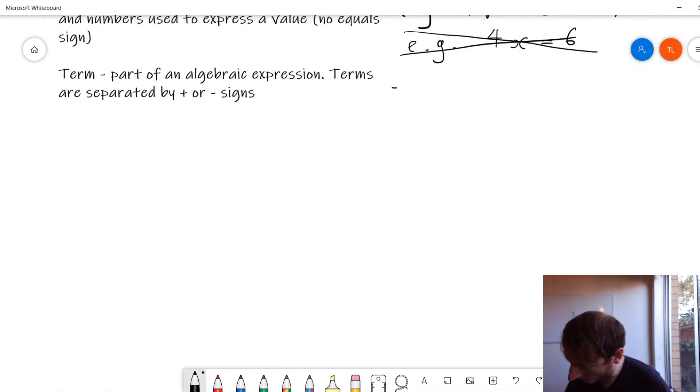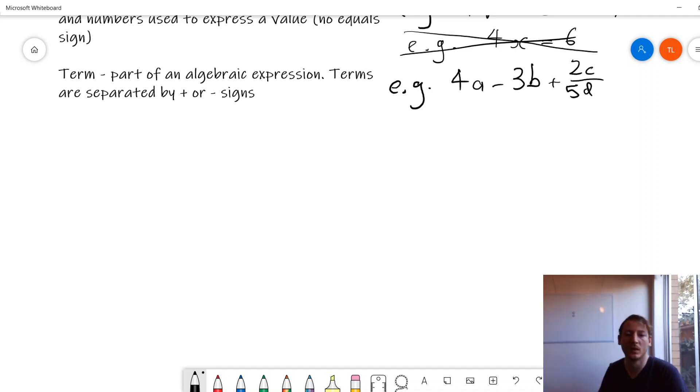All right. E.g. Let's say I've got 4a minus 3b plus 2c over 5d. In this example I have an algebraic expression and there are some different terms. I've got term 1, term 2, and term 3. So even though this last one here has two pronumerals, those pronumerals are separated by a fraction or division which means they are not a new term. So this one has three terms.